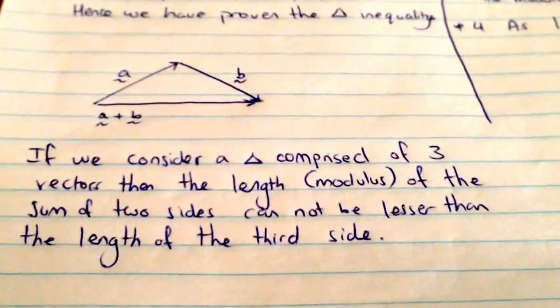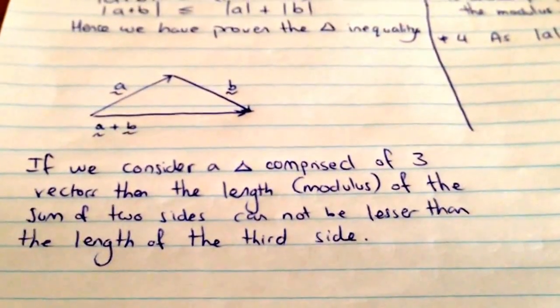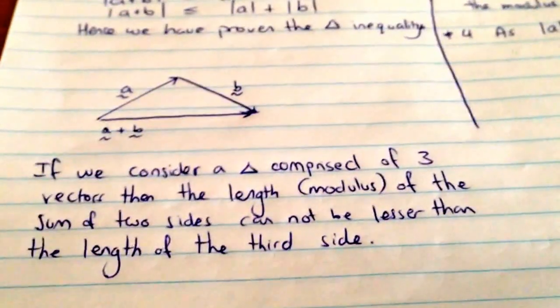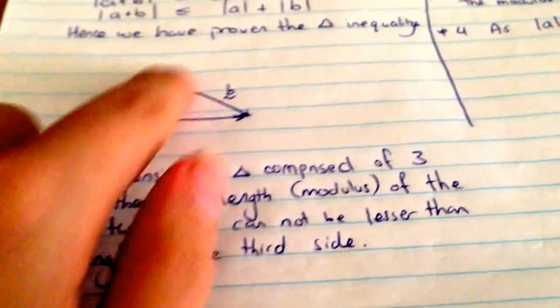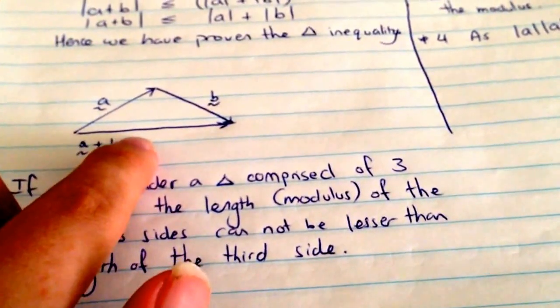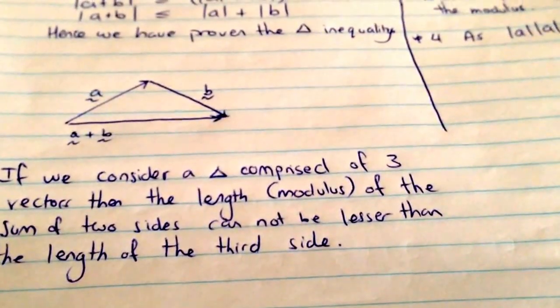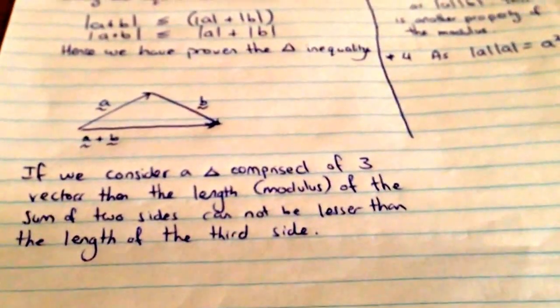So if we consider a triangle comprised of those three vectors, then the length or modulus of two sides, a and b, cannot be less than the length of the third side. So we've essentially shown that if we add those two lengths together, it can't be less than that side there. That's what we're saying, which sort of makes sense when you think about how triangles work.